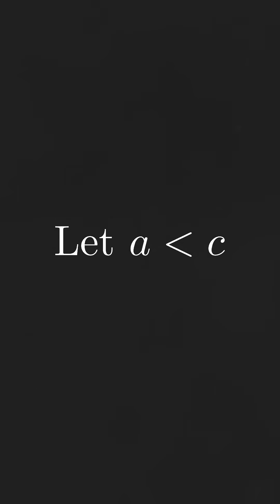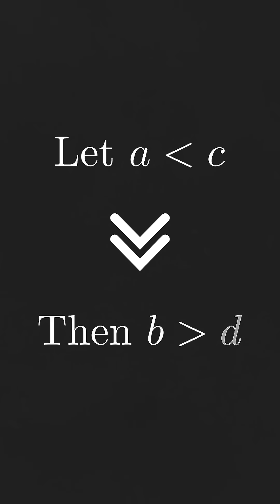Let's assume that such numbers do exist, and without loss of generality, let's assume that a is less than c, which would imply that b must be greater than d.